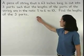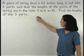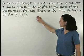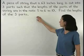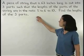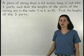A piece of string that is 63 inches long is cut into three parts such that the lengths of the parts of the string are in the ratio 5 to 6 to 10. Find the lengths of the three parts.